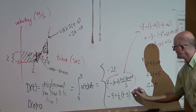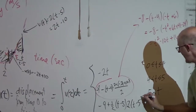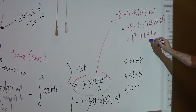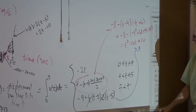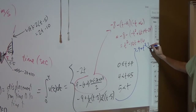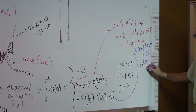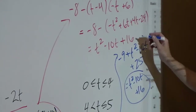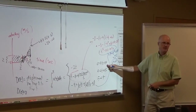Bringing the 2 factor back out so I can cancel it with the one-half, and simplifying: negative 9 plus (t minus 5) squared. Expanding: t squared minus 10t plus 25, so the full expression becomes t squared minus 10t plus 16. Same formula as the previous case. So in reality, we only needed two pieces to this formula: t less than or equal to 4, and t bigger than 4.